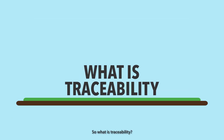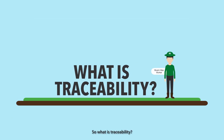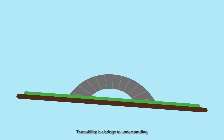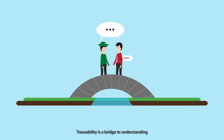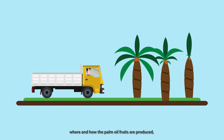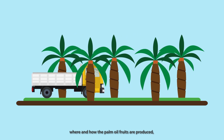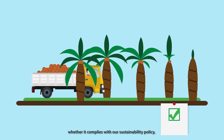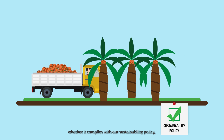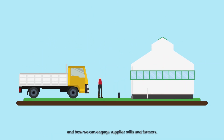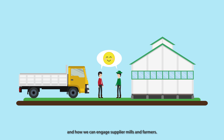So what is traceability? Traceability is a bridge to understanding where and how the palm oil fruits are produced, whether it complies with our sustainability policy, and how we can engage supplier mills and farmers.